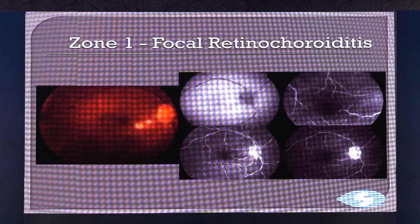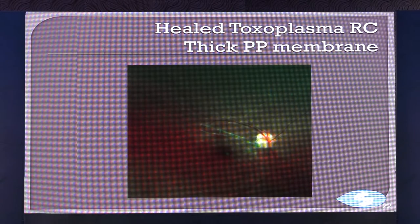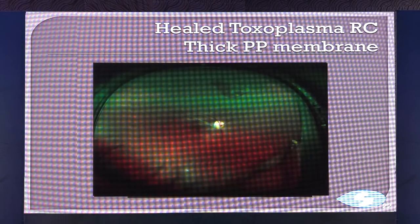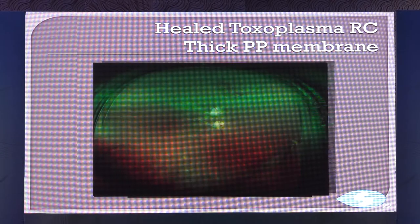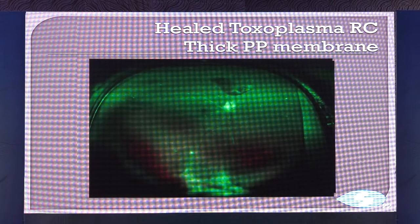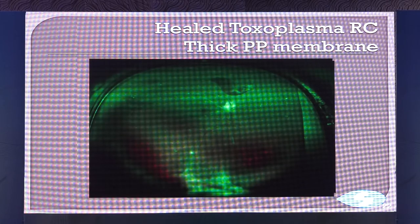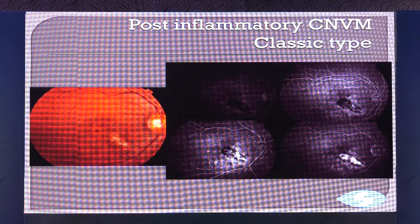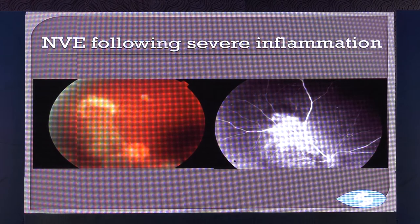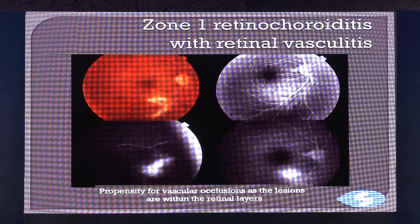Another finding is retinal vasculitis. You can have very severe inflammation hidden in the periphery — for example, a huge pars plana membrane overlying the periphery in a patient with toxoplasmosis. Secondary changes can occur: PVD, CNV formation, and intraretinal neovascularization. Because this is a retinochoroiditis in the retinal layers, retinal vasculitis occurs, and you can see a branch retinal artery or combined occlusion with activity at the edge of a pigmented patch.